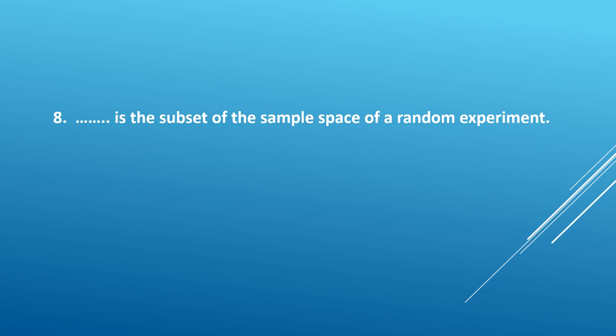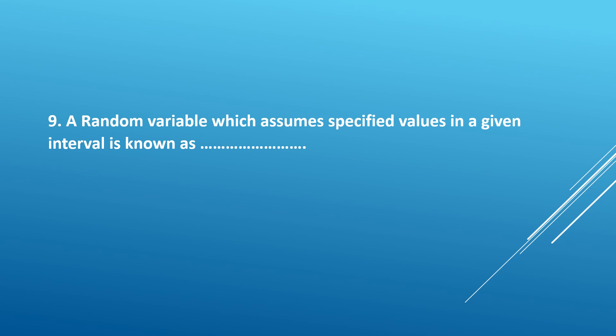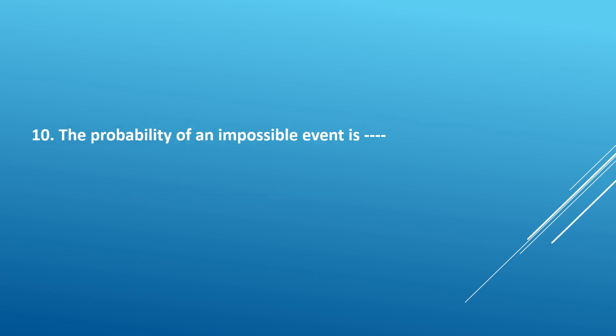Eighth question: Dash is the subset of the sample space of a random experiment. Answer is event. Event is the subset of the sample space of a random experiment. Ninth question: A random variable which assumes specified value in a given interval is known as dash. Answer: discrete probability distribution. Tenth question: The probability of an impossible event is dash. Answer is zero.